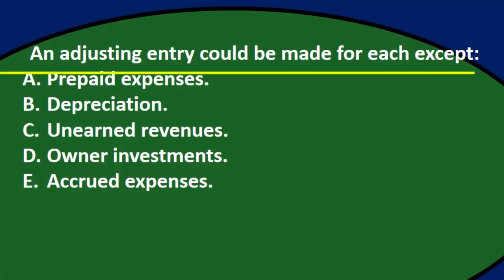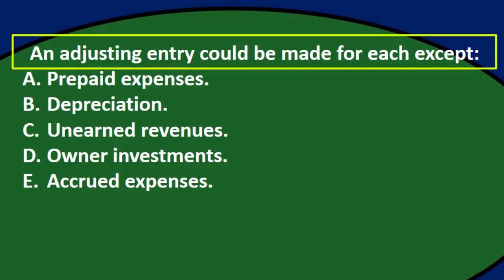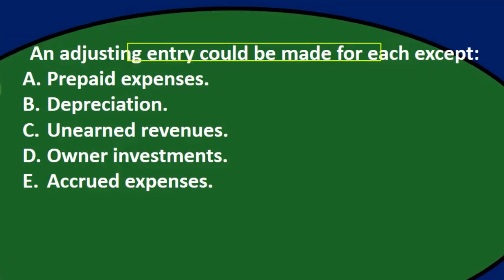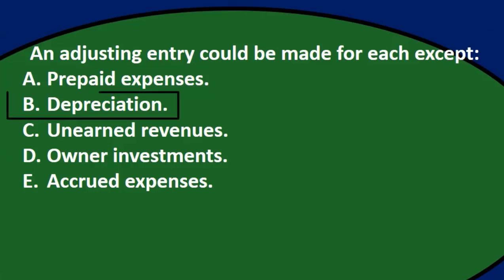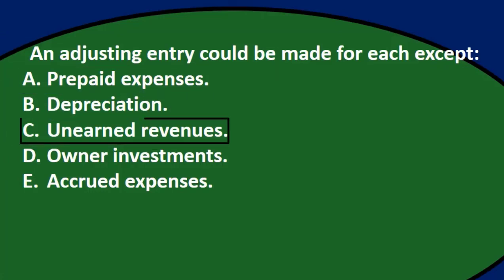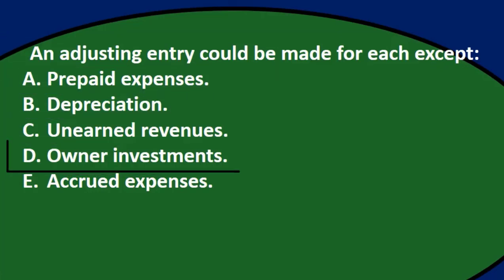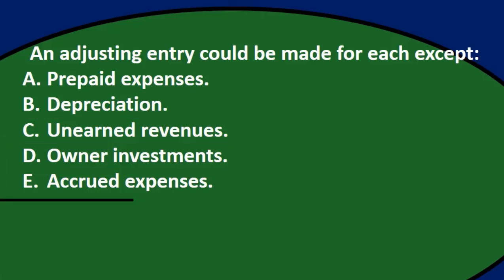Next question: an adjusting entry could be made for each except — A, prepaid expenses; B, depreciation; C, unearned revenues; D, owner investments; E, accrued expenses.